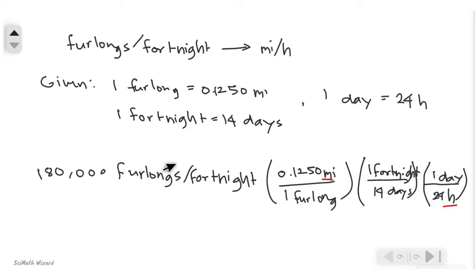Miles per hour, because here we can cancel out the unit furlongs. We can cancel out the unit here furlongs, and here fortnight in denominator and fortnight in numerator. And also the days here and here. And we're left with miles per hour.